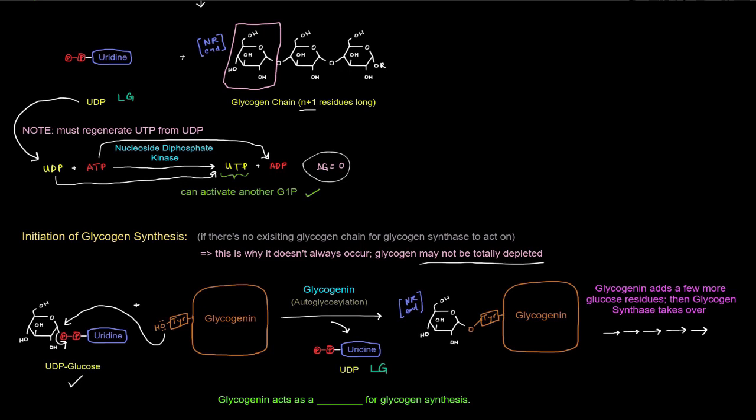Now, what catalyzes that reaction is glycogenin. Glycogenin is an autoglycosylation. Glycosylation is when you add a sugar moiety to something. So autoglycosylation is self-glycosylation, right? So this glycogenin glycosylates itself. So this is a post-translational modification of this protein. It does it to itself. So now we have the glucose residue attached to glycogenin.